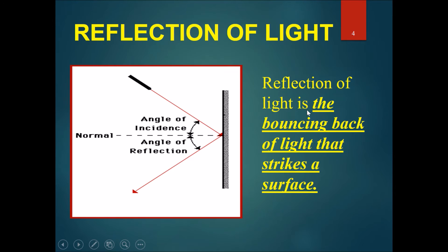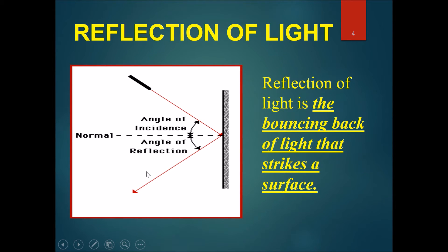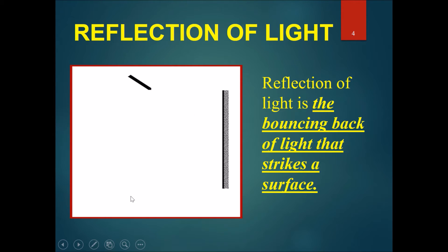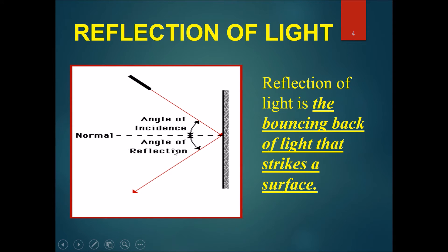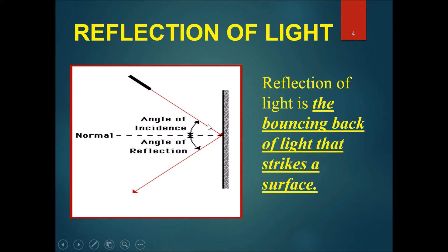Reflection of light is the bouncing back of light that strikes a surface. You can see here that light from a laser pointer hits a mirror and bounces back out. A line called the normal is drawn exactly at right angles to the mirror, and there is an angle of incidence and an angle of reflection.